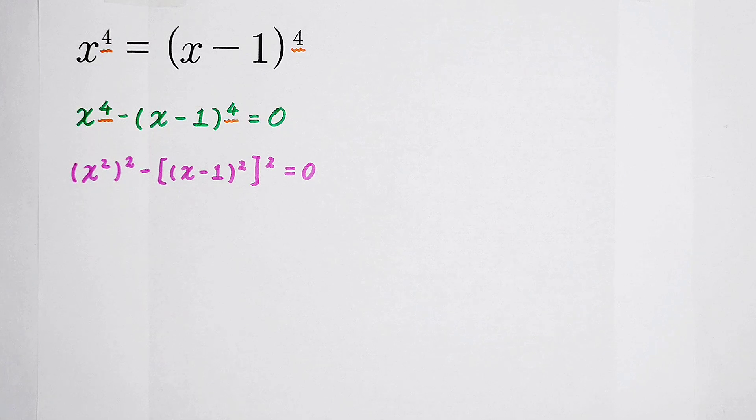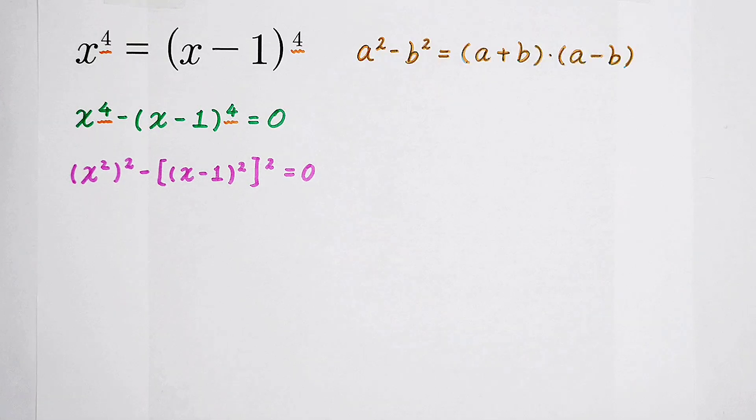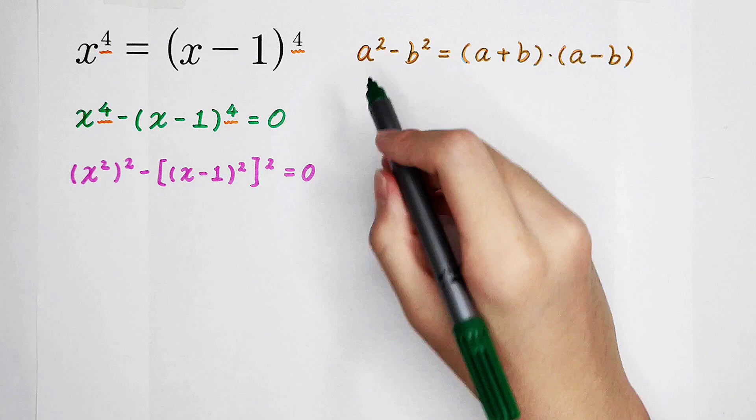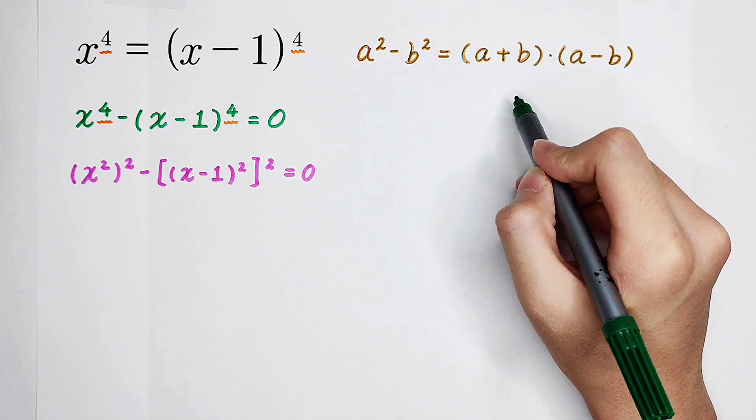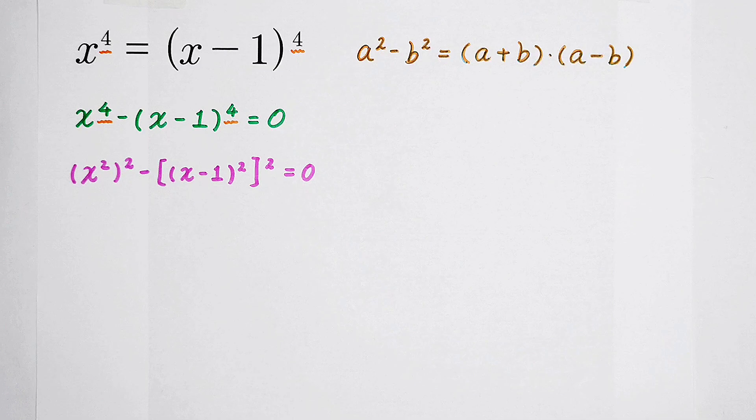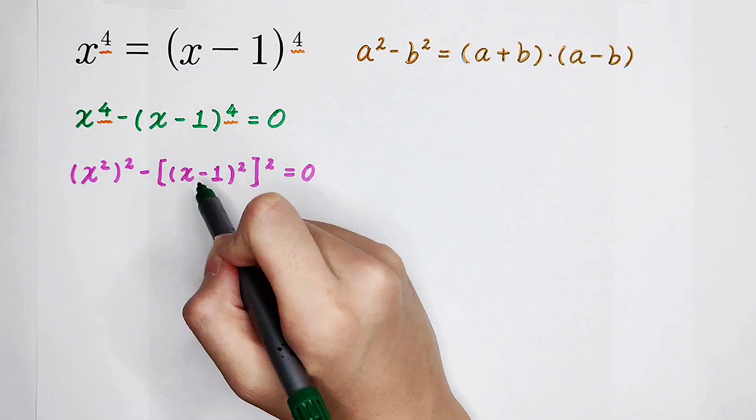Wonderful change. Use this formula, the third binomial formula: a squared minus b squared is equal to a plus b times a minus b. Now, a is x squared, b is x minus 1 all squared.